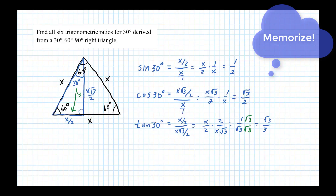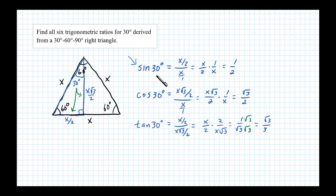At this point, I encourage you to type these into a calculator — make sure you're in degree mode — and verify that your calculator gives sine of 30° as 1/2 or 0.5, and cosine of 30° as √3/2 or its decimal equivalent. Now let's find the reciprocal trig ratios.